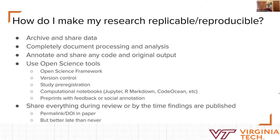Often the best way to do it is with open science tools like the Open Science Framework, version control, and computational notebooks — things that make it easier to document and ensure you're sharing everything. As much as possible, share everything during the review process, or by the time findings are published at least, with a permalink or DOI in the paper. But even if you have 10-year-old data, it's still better late than never to publish.